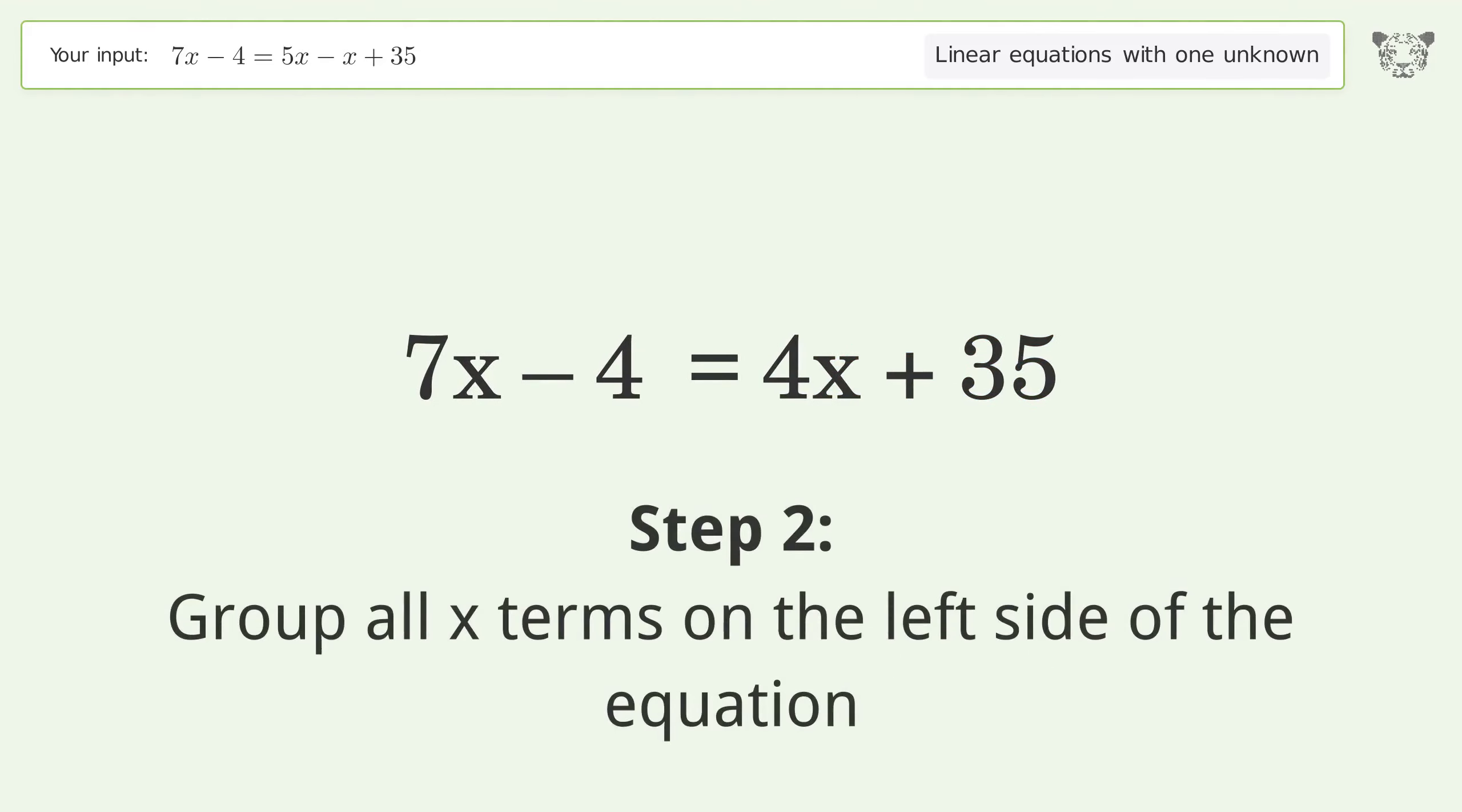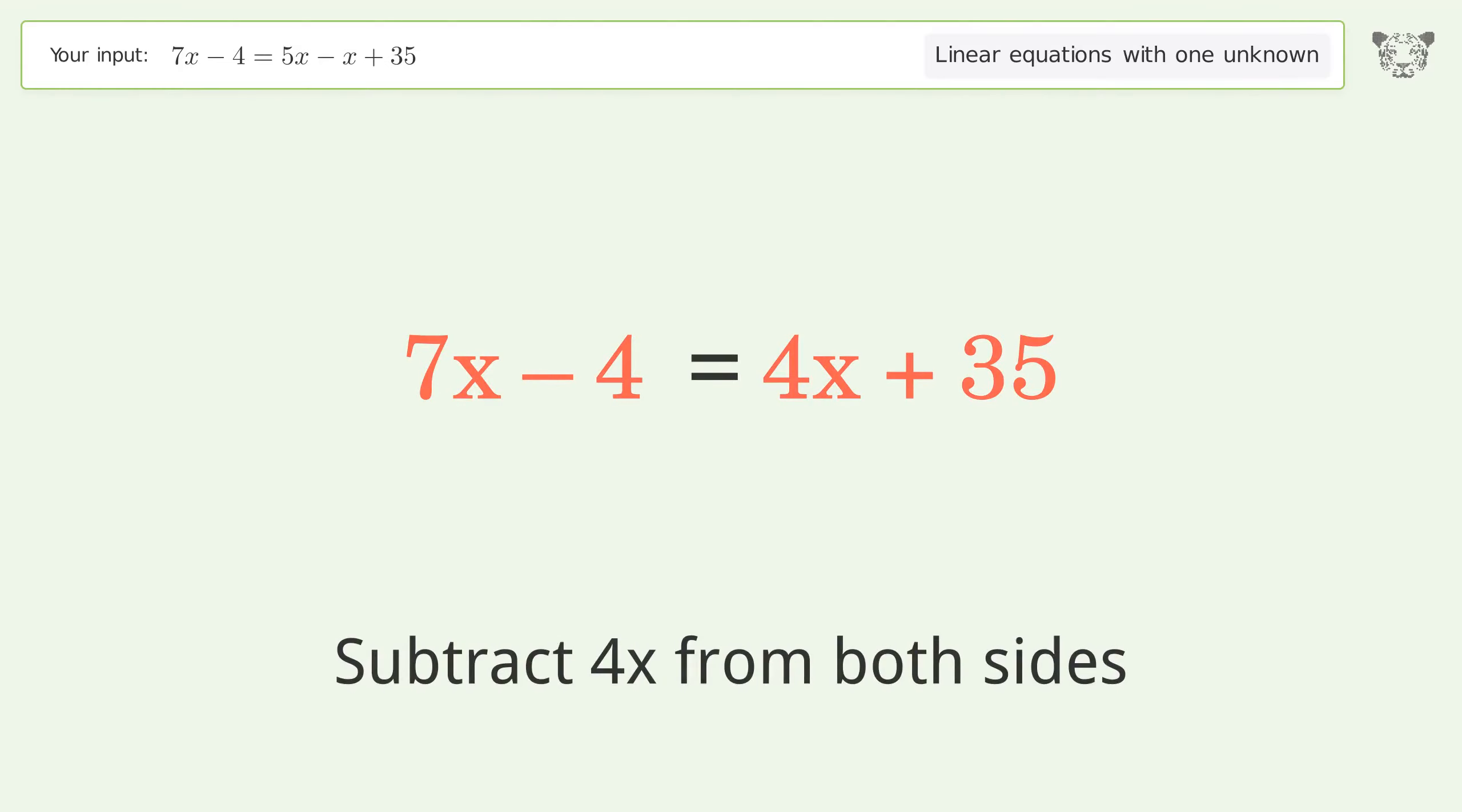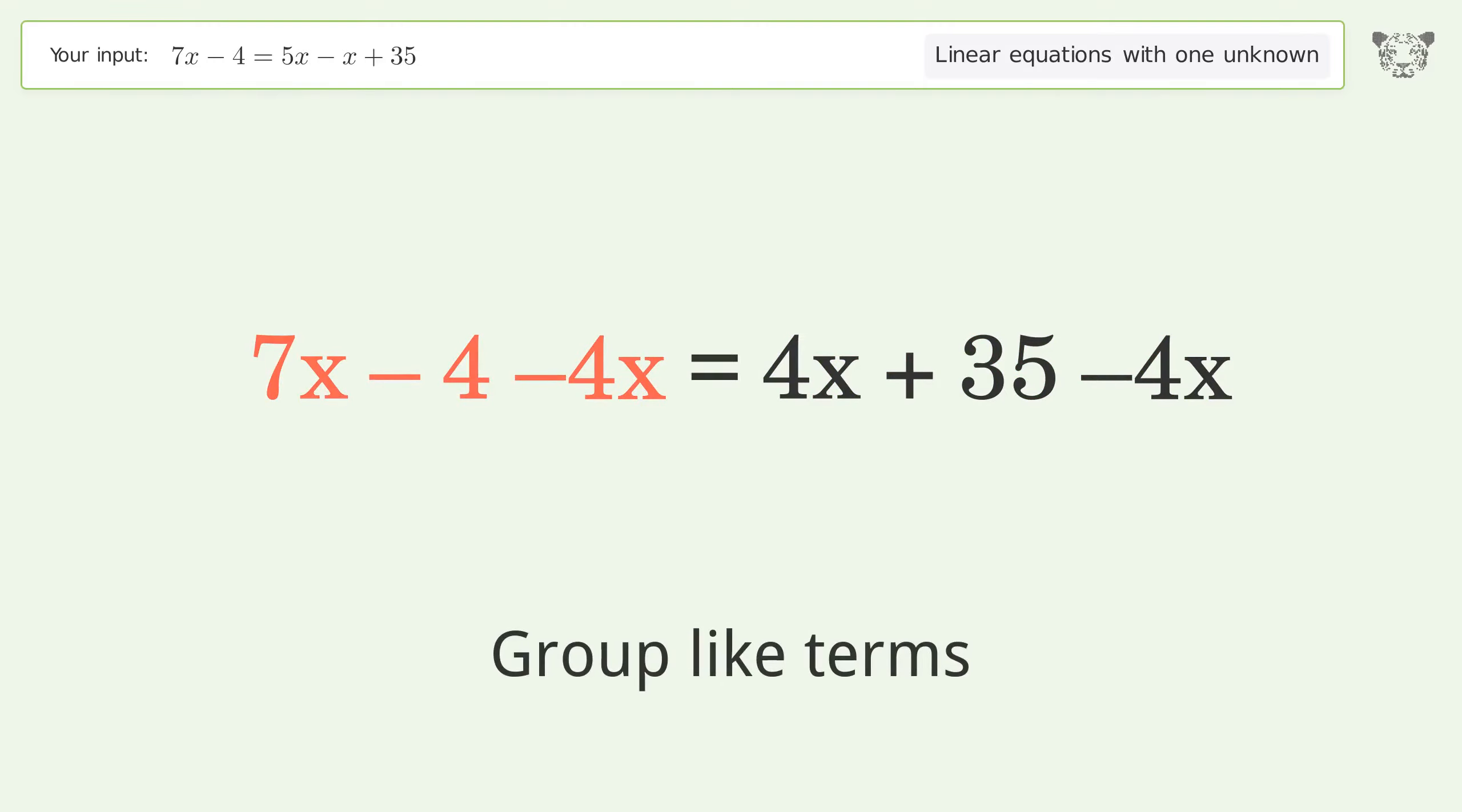Group all x terms on the left side of the equation. Subtract 4x from both sides. Group like terms. Simplify the arithmetic.